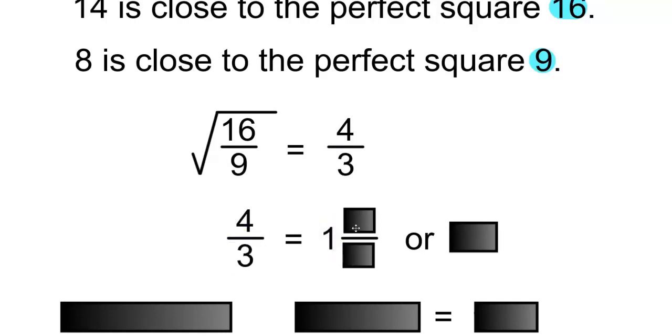If we have 4 over 3, this can also be written as 1 and 1 over 3, and 1 divided by 3 is 0.3 repeating, so that will also give us 1.3 repeating.